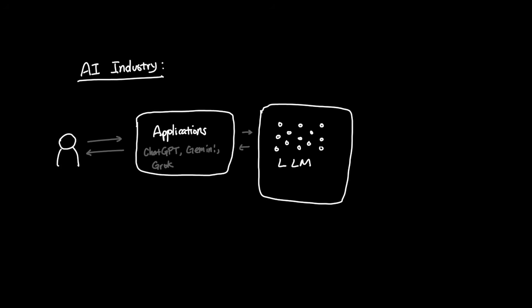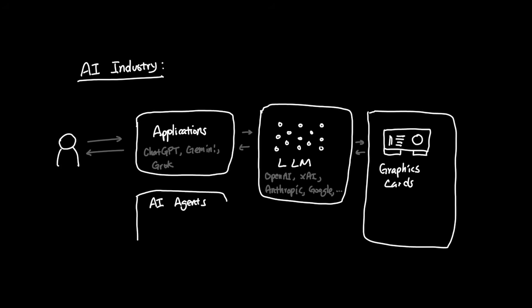Let's start by first breaking down the industry in this way, starting from more traditional AI applications like ChatGPT, Gemini, and Grok that we use on a daily basis, and they all use large language models. And frontier labs like OpenAI, XAI, Anthropic, and Google all need access to graphics cards. Meanwhile, we also have a more complicated extension of LLMs like AI agents like Claude Code, Cursor, or even custom chatbots that use RAG. These are agentic applications that really extend the LLMs capabilities.